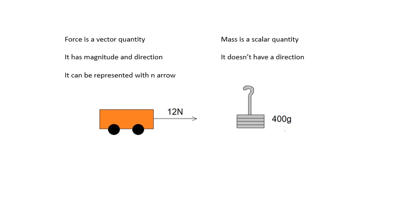Force is a vector quantity. Mass is a scalar quantity. What's the difference between a vector and a scalar? Basically, a vector has direction. A force, this 12-Newton force, is going to the left horizontally. Mass doesn't have direction, it just has magnitude. 400 grams. It's not 400 grams up or down or east or west. It's just 400 grams, full stop.